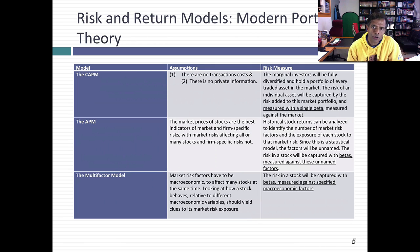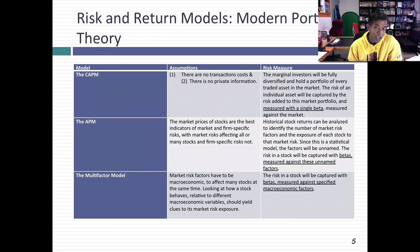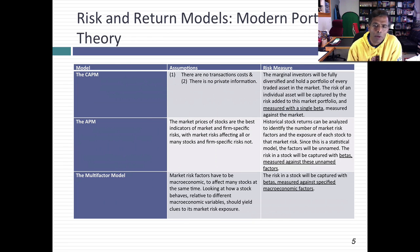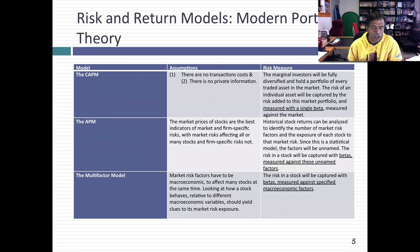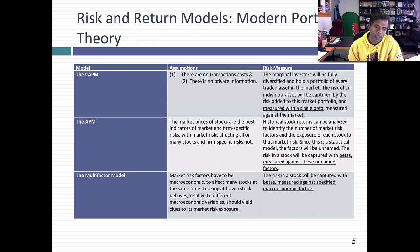Of course, the CAPM makes some very strong assumptions. In the years since, people have tried to adapt, modify, and expand the model. The arbitrage pricing model tried to do that by arguing the risk you care about is the risk you cannot diversify — on that they agreed. But then it said, why should we measure all of that risk with one market portfolio and one beta? The arbitrage pricing model allows for multiple sources of market risk and a beta against each one. It is fundamentally a statistical model because it uses past data to identify the number of sources of market risk and the betas against each one.